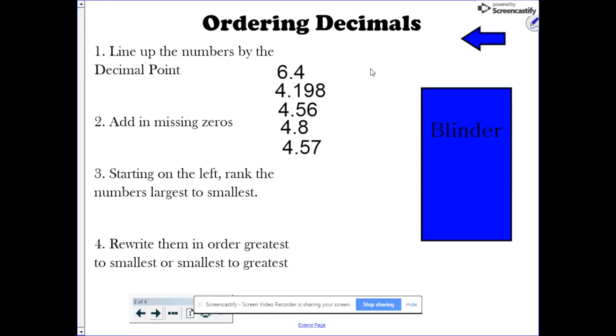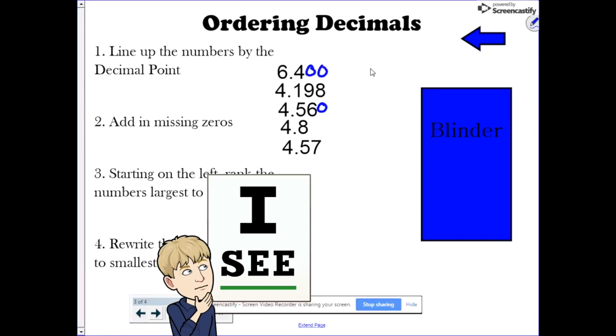Then, you add in those missing zeros. As you can see, this will make each decimal place end in the thousandths, making them easier to compare.